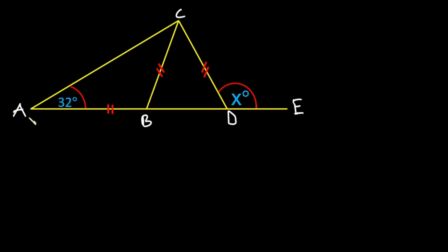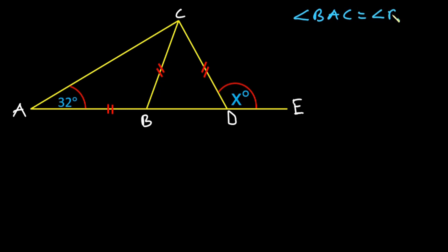Let's consider triangle ABC, which is an isosceles triangle. Triangle BCD is also an isosceles triangle. One property of an isosceles triangle is that it has two sides equal and two angles equal. Considering triangle ABC, line AB is equal to line BC, so the base angles are equal — angle BAC equals angle BCA, and this is equal to 32 degrees.